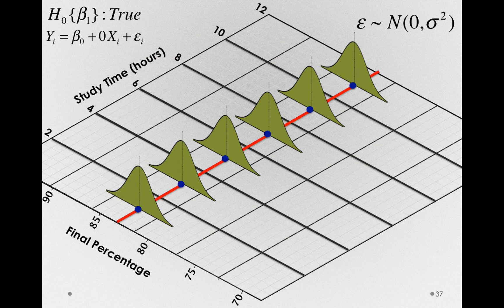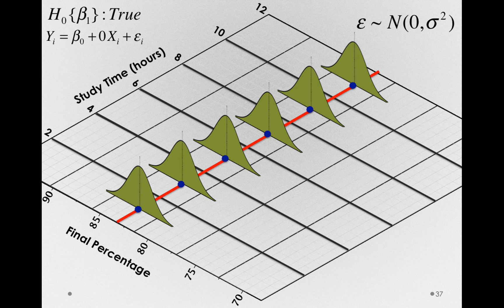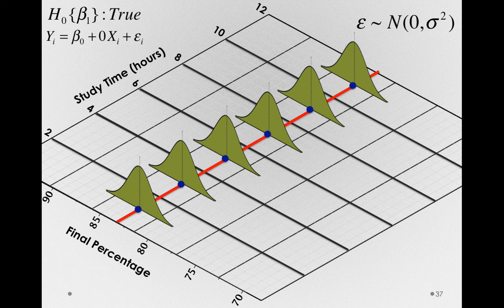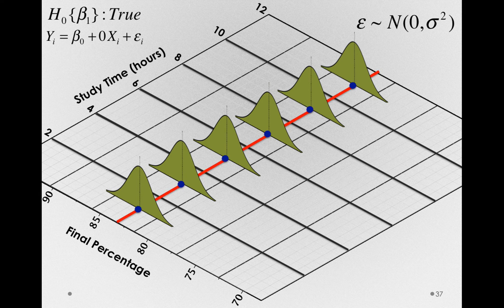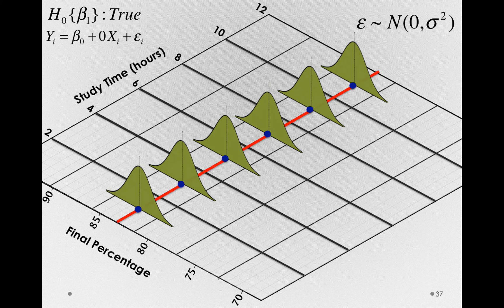Let me give you a diagram to help you see why this is the case. Here are the spacings we had to start with, observing people at 1, 3, 5, 7, 9, and 11 hours of study.